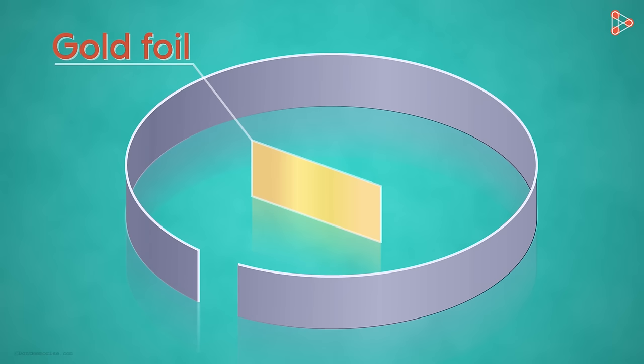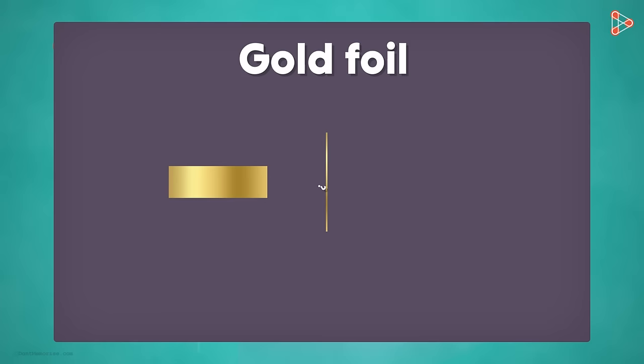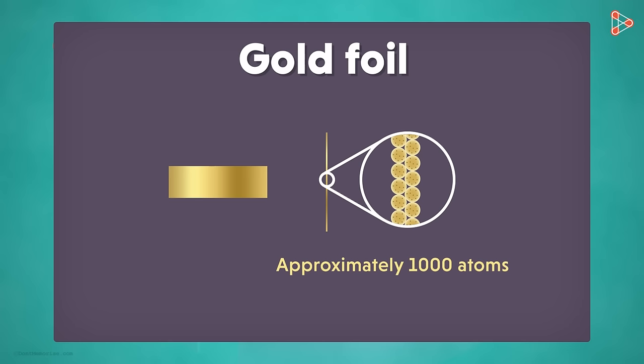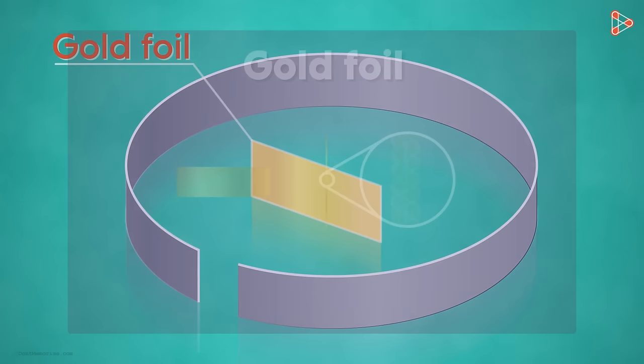Next, he used a very thin gold foil on which the alpha particles would bombard. Why did he choose a gold foil? A really thin gold foil was estimated to contain approximately 1000 atoms. Lesser the atoms, more convenient the experiment would be.